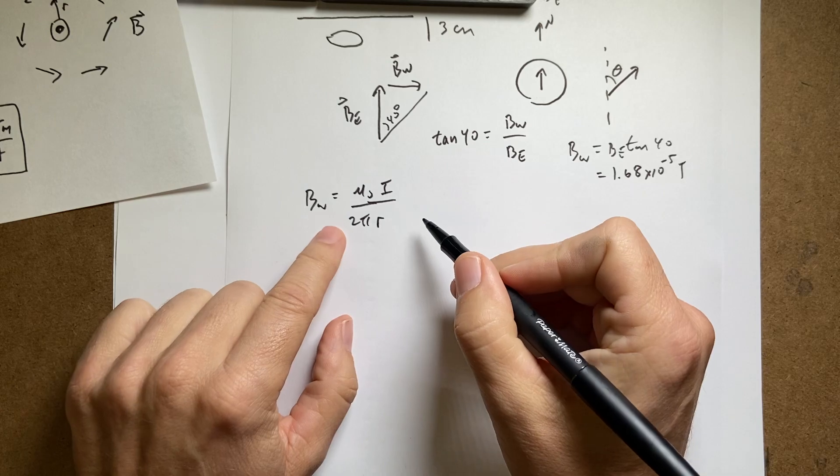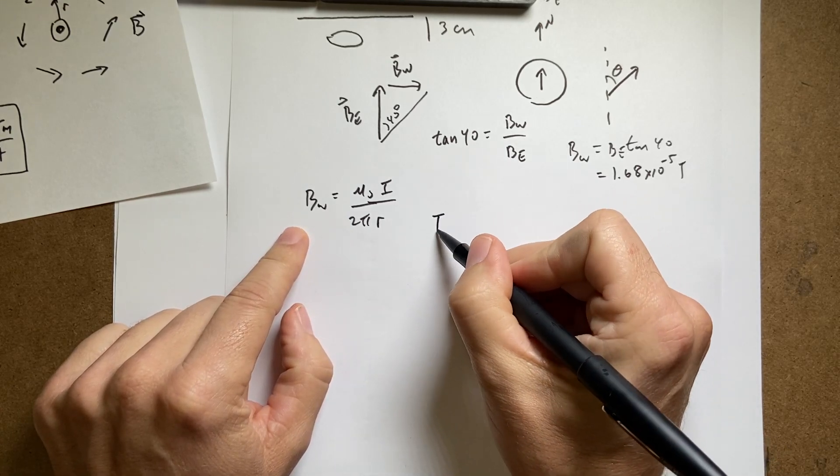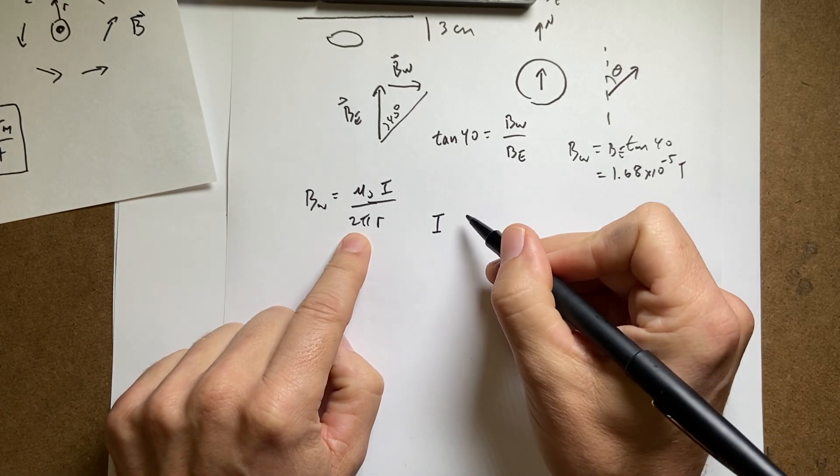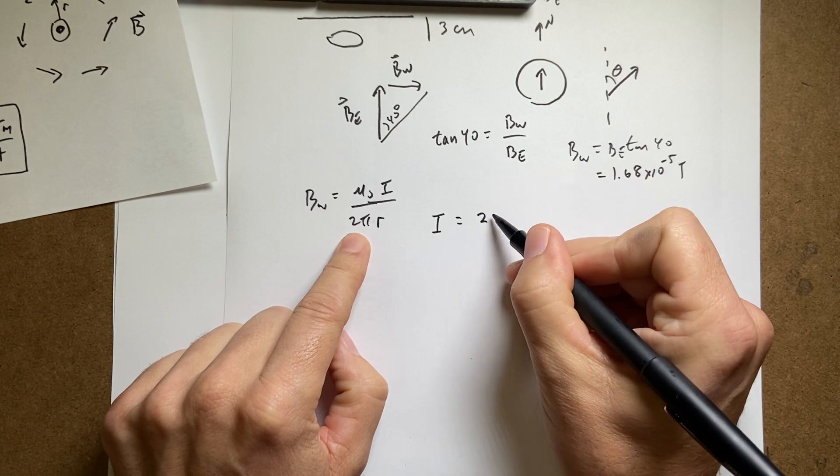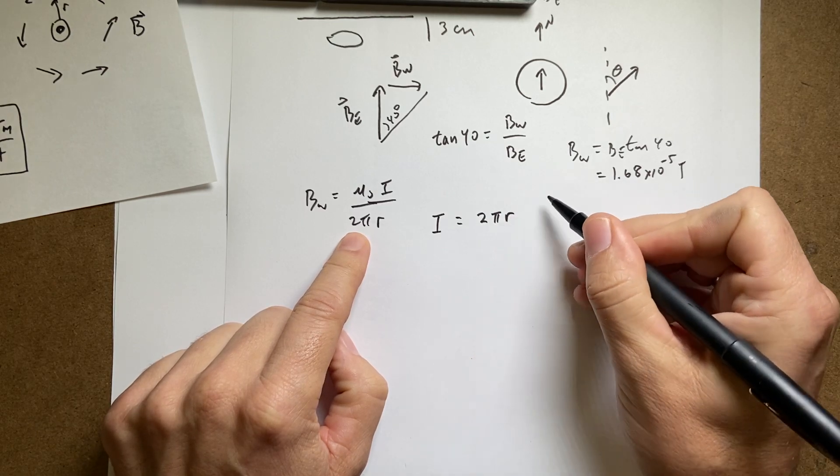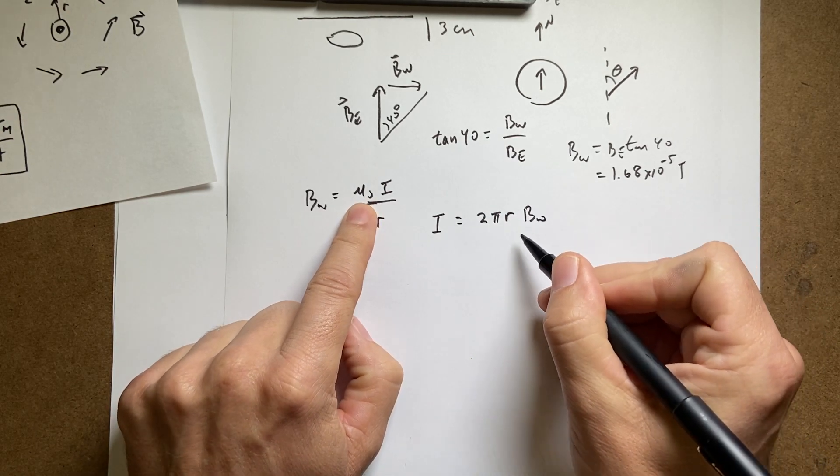I'm going to multiply both sides by 2 pi r. And I get 2 pi r times b wire, all of that divided by mu naught.